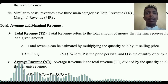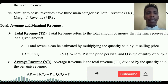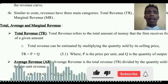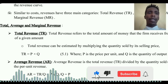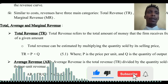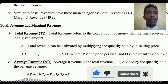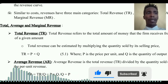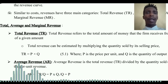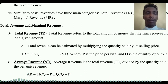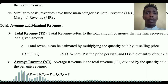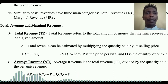Now let's look at revenue concepts for a perfectly competitive market. Total revenue refers to the total amount of money that the firm receives from the selling of a given amount of product or commodity.